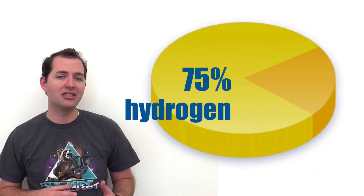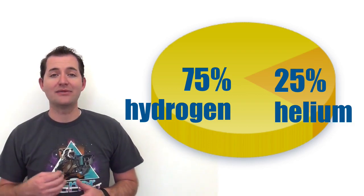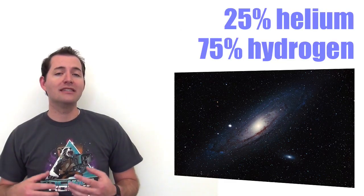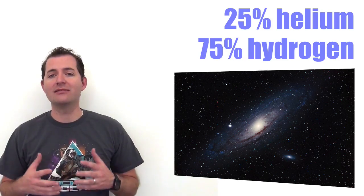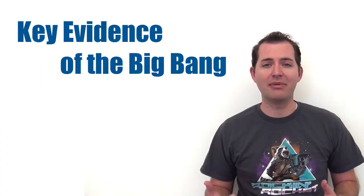Scientists have been able to determine that the universe should have formed into about 75% hydrogen and about 25% helium. And as we look at the universe today, we can still see that this ratio is present, and this serves as one of the big key evidences of the Big Bang.